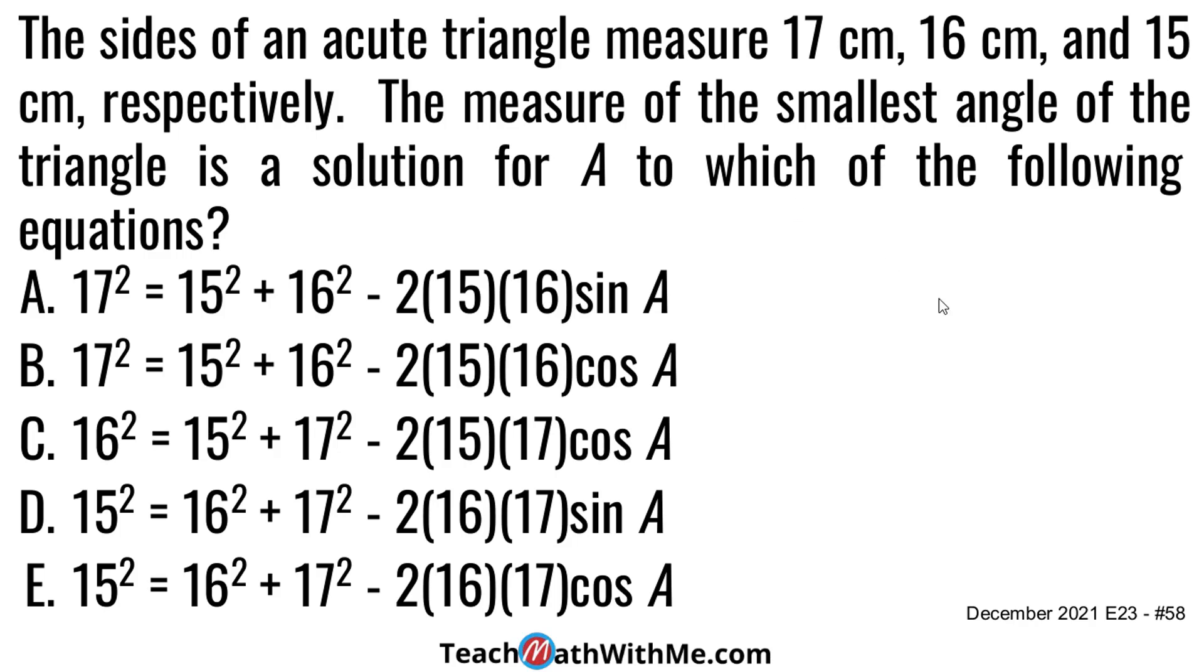So I want to first sketch out an acute triangle, and I'm given these measures of 17, 16, and 15. And it tells me that the measure of the smallest angle, which I know is going to correspond to the one opposite of 15, is a solution for A to which of the following equations? So that's going to make A be that angle there.